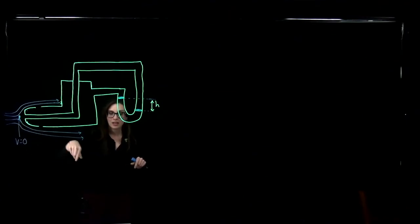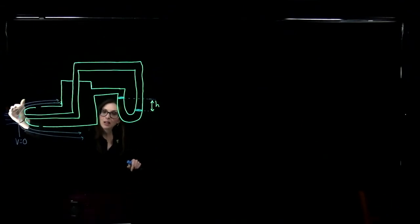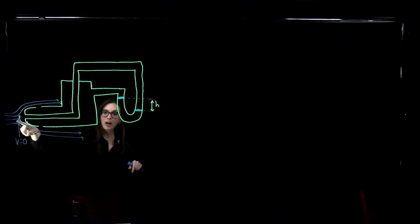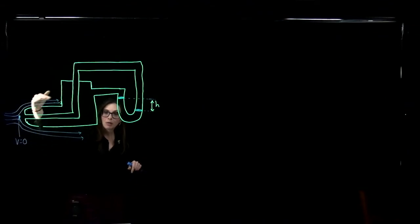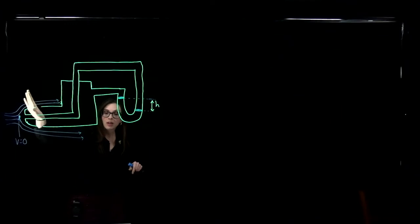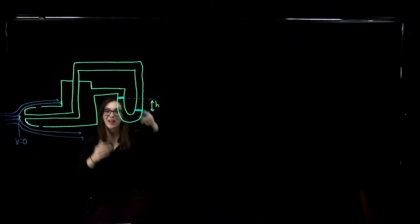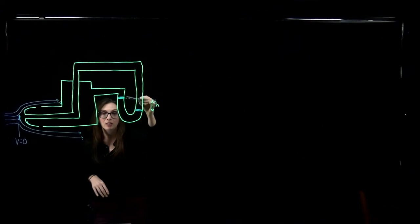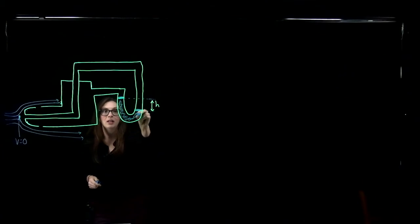We've got no velocity at the stagnation point, but we do have velocity above and below the pitot tube where the openings are. So the pressure where the velocity is zero is going to be greater than the pressure at those side openings where the air is flowing. That pressure difference is going to cause a change in the height of the fluid in the arms of our manometer. We'll say our U-tube manometer is filled with water.